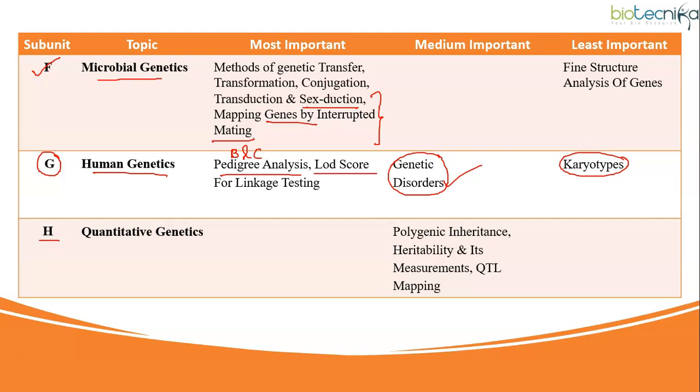Now let's have a look at subunit H which is about quantitative genetics. I would have asked you to skip this particular subunit. But if we see the trend, if we look at the past 3 to 4 previous year question papers of CSIR Net, you will find that questions are asked from here. Especially numerical questions on measuring heritability or heritable variations are expected from this particular subunit. And even QTL mapping, that is quantitative trait loci mapping, you study in unit 12 as well. So if you are preparing this topic in unit 12, you can skip it from here.